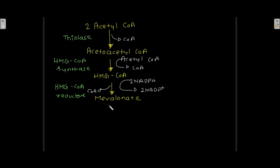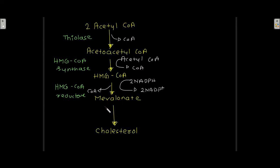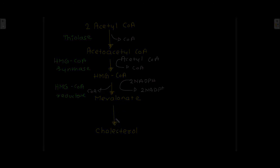Finally, this mevalonate is converted into cholesterol. So, from acetyl coenzyme A, mevalonate is synthesized, and from mevalonate, cholesterol is ultimately synthesized.